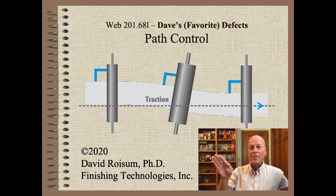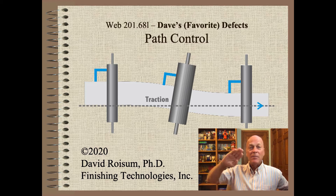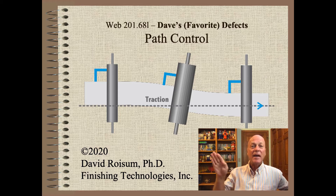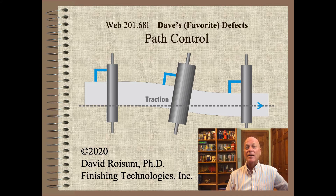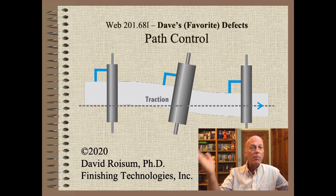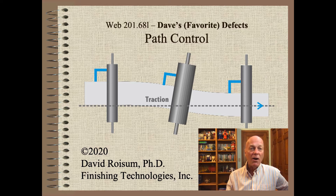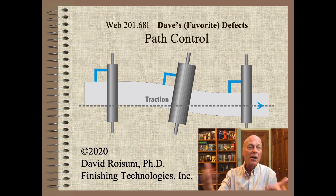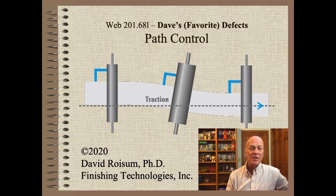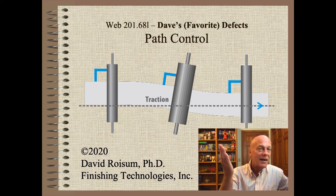Welcome to Web Handling. My name is Dave Roysam. I am super excited to continue this series with an outline of how to troubleshoot a variety of web path control problems that include things like poor printer color-to-color registration, webs running off rollers, rough roll edges on winders, as well as many others. I know your time is precious, so let's get started.